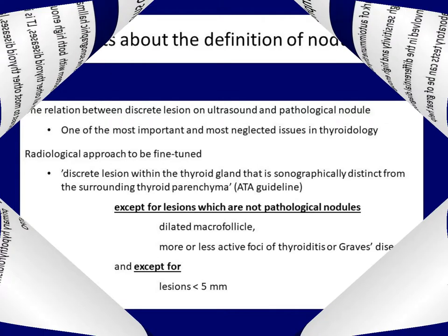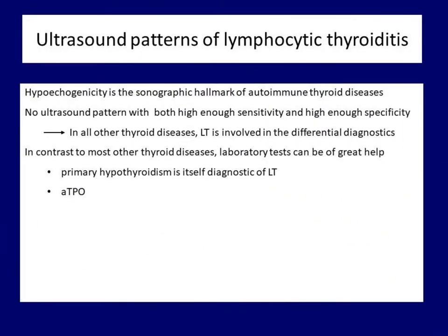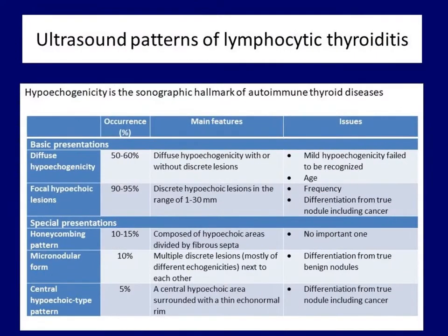Now turning to the ultrasound presentations of lymphocytic thyroiditis. Basically, hypoechogenicity is the hallmark of autoimmune thyroid diseases, particularly lymphocytic thyroiditis. Diffuse hypoechogenicity is observed in half to two-thirds of cases. The more pathognomonic presentation is the focal form, which can be found in more than 90% of cases. It is worth mentioning three special forms: the so-called honeycombing pattern, the micronodular form, and a third subtype characterized by a central large hypoechoic field surrounded by an echonormal rim.